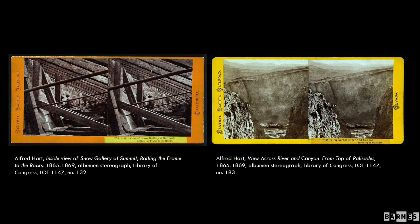Hart was a prolific but overlooked photographer who documented the construction of the Central Pacific Railroad in nearly 400 stereographs from 1865 to 1869. At the time, stereographs were the most common format in which photographs circulated amongst the public. Stereographs present two slightly different photographs side by side that produce the illusion of three-dimensionality when viewed through a stereoscope. While a great number of studies on Hart's contemporaries have focused on frontier photography in its two-dimensional presentation, far fewer have expressly considered these photographs in 3D.